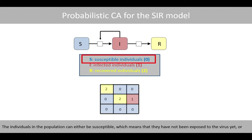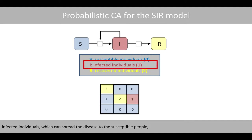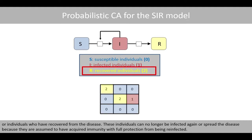The individuals in the population can either be susceptible, which means that they have not been exposed to the virus yet, or infected individuals which can spread the disease to susceptible people, or individuals who have recovered from the disease. Recovered individuals can no longer be infected again or spread the disease because they are assumed to have acquired immunity with full protection from being reinfected.